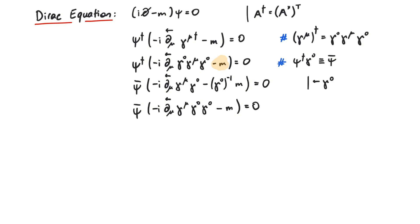Finally, by using the Clifford algebra of the gamma matrices, we see that gamma zero, gamma zero is equal to the identity matrix. So we arrive at the Dirac equation for psi bar.